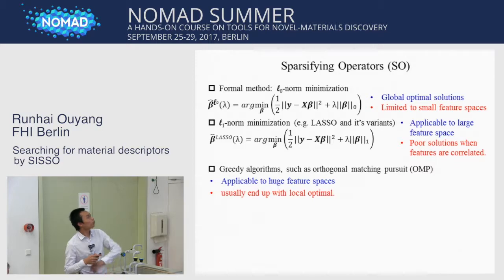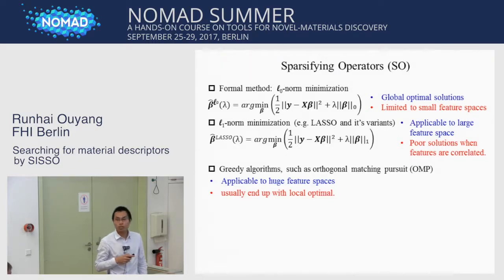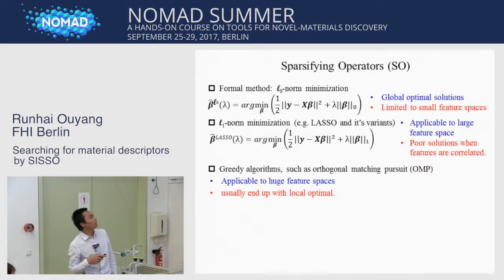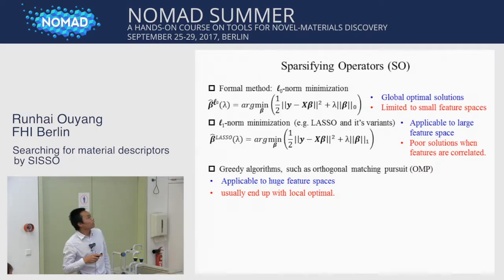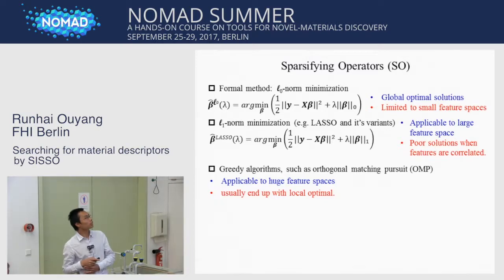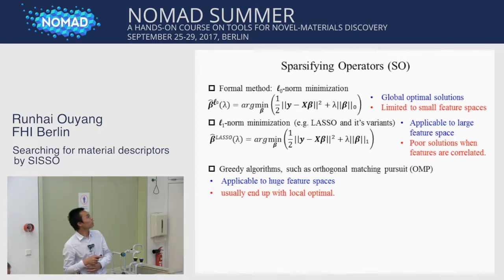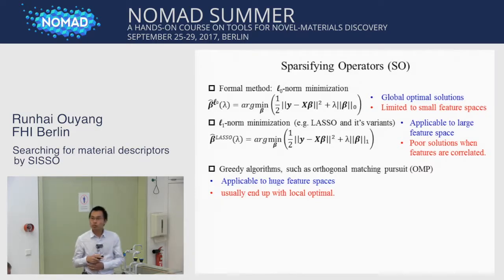Here are popular sparsifying operators. Formally, L0 should be used because it can give the global optimal solution. However, it is only applicable to small feature spaces because it is NP-hard. L1 (LASSO) can apply to large feature spaces, but usually gives poor solutions when features are correlated. Greedy algorithms such as Orthogonal Matching Pursuit (OMP) are applicable to huge feature spaces, but usually end up with a local optimum. So we need a better method for finding sparse solutions.